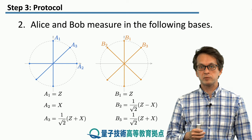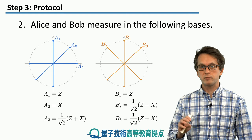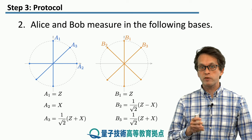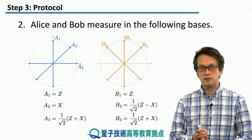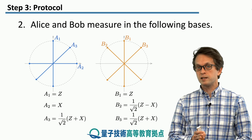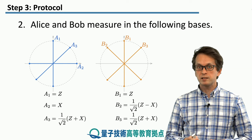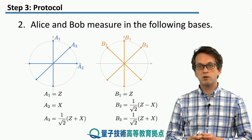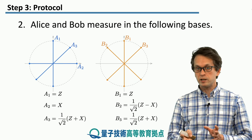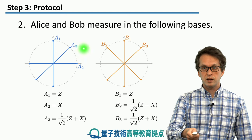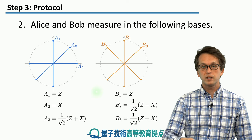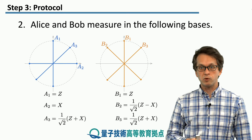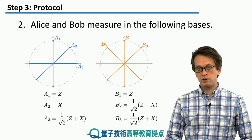Why do we have three different measurements per Alice and three per Bob, rather than two as in BB84? Some of these measurements overlap — this is needed for generating the secret random key. If both Alice and Bob measure the entangled state in the same basis, they can use the classical outcomes to generate and establish a correlated random key. On the other hand, we need rotated bases such as A3, B2, and B3 in order to compute the CHSH expression and verify violation of the classical CHSH inequality, establishing that Alice and Bob are really sharing an entangled state.